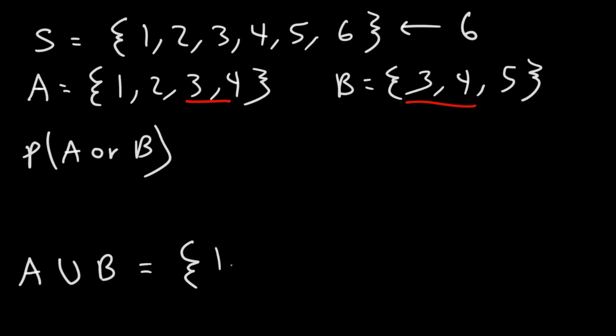Event A occurs anytime we get a one, two, three, or four. B occurs if we get a three, four, or five. So this will include everything except six.